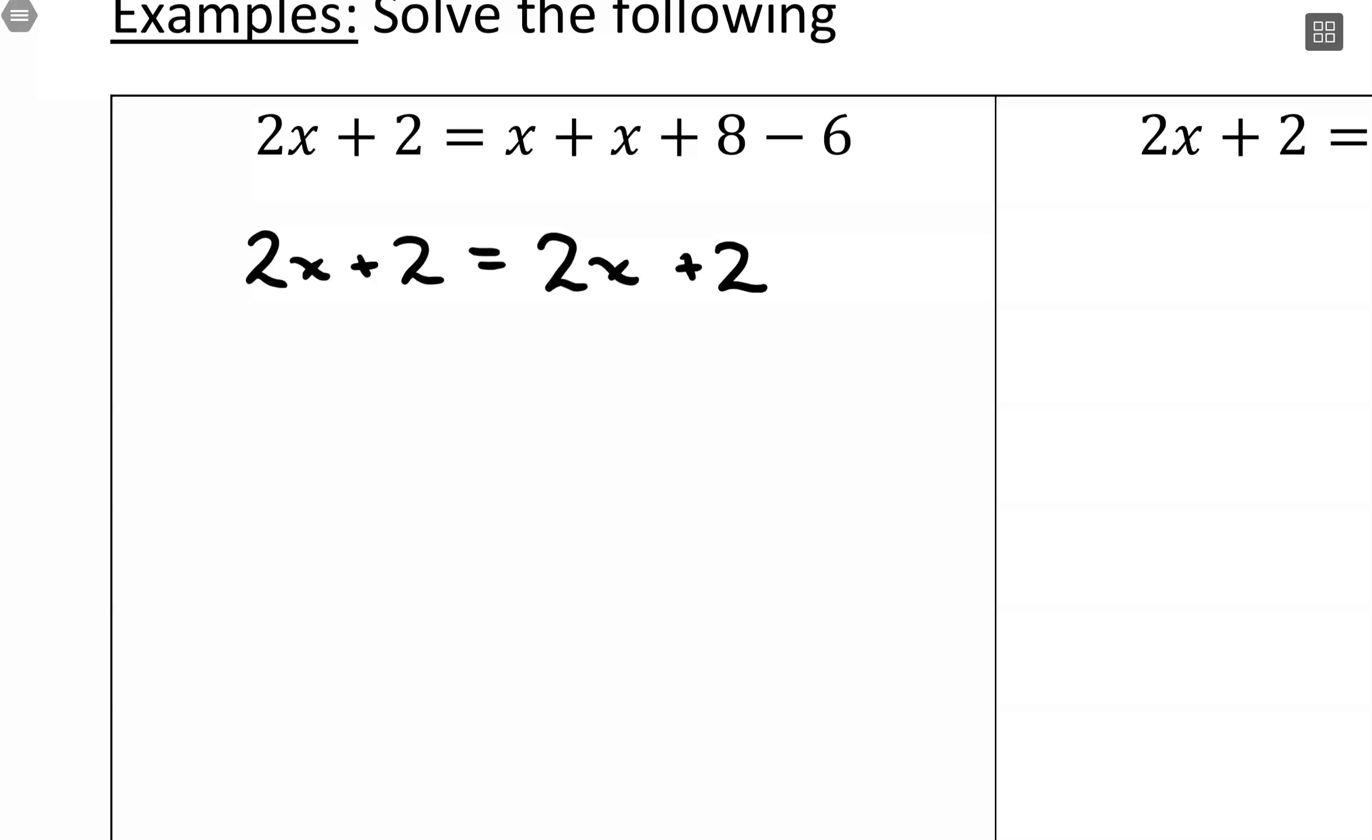I'm going to go one step further, which would be our step to move everything with our variable to one side of the equation. So what I would do here is, say I wanted to get rid of this positive 2x, then what I would need to do is subtract 2x from both sides.